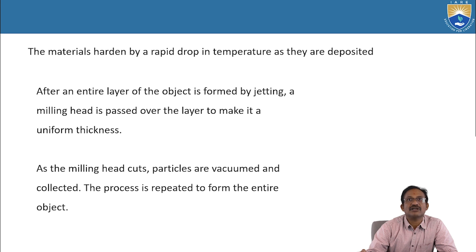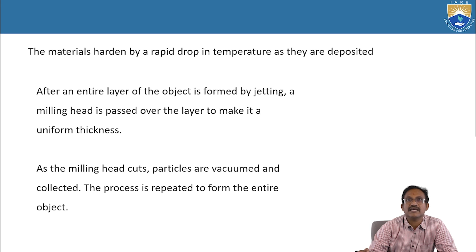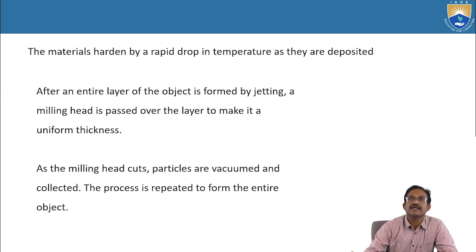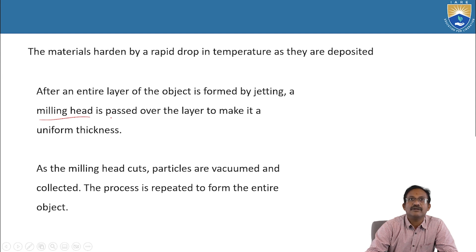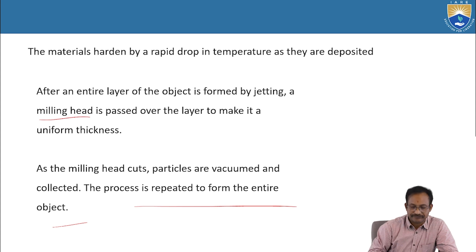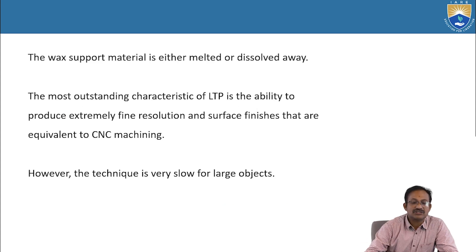After an entire layer of the object is formed by jetting, a milling head is passed over the layer to make it a uniform thickness. In order to get uniform thickness, one milling head is arranged. As the milling head cuts, particles are vacuumed and collected. The process is repeated to form the entire object. The wax support material is either melted or dissolved away.